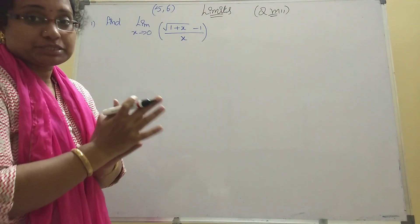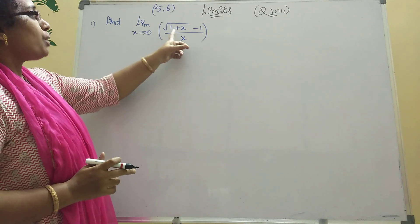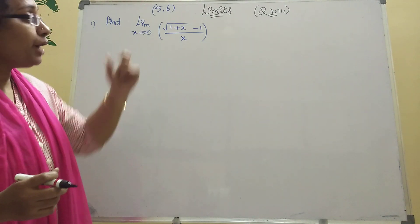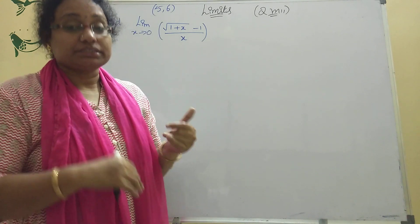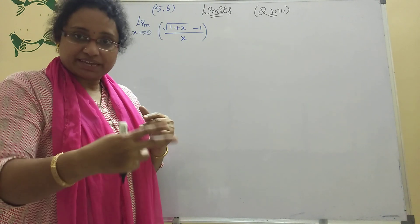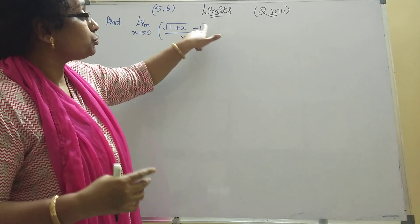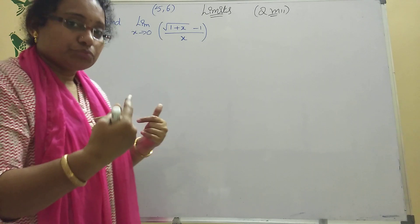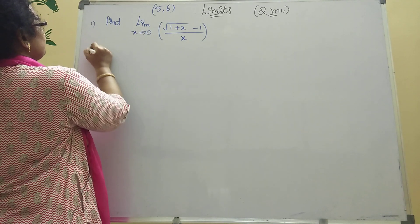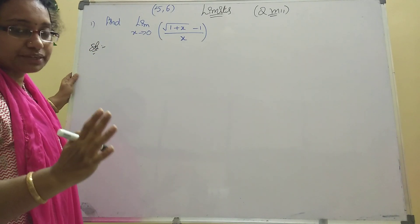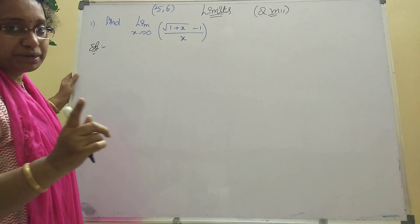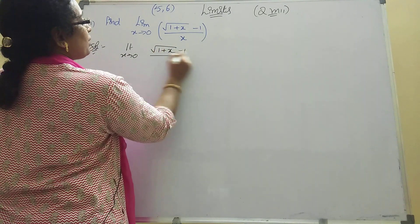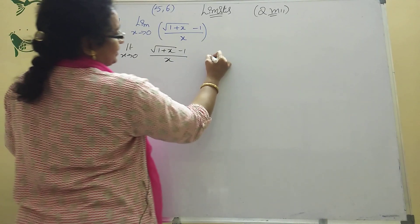Now let's do some sums. Find limit x tends to 0, root of (1 plus x) minus 1 divided by x. Listen carefully: whenever a root term is there in numerator or denominator, you should do rationalizing with the opposite sign. If minus is there in numerator, rationalize with the numerator. Now I will solve this model.